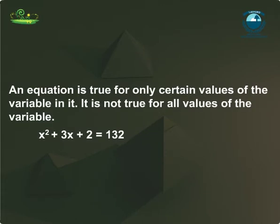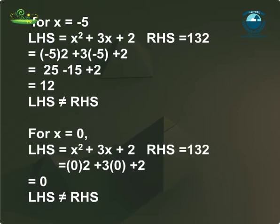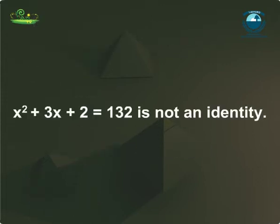An equation is true for only certain values of the variable in it; it is not true for all values of the variable. For example, consider the equation x²+3x+2 = 132. This equation is true for x=10, but it is not true for x=-5 or x=0, etc. So, this equality is not an identity.